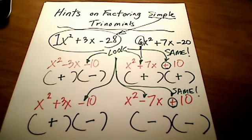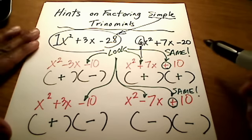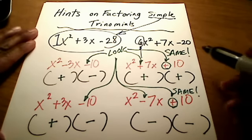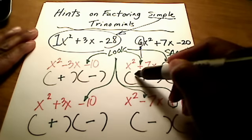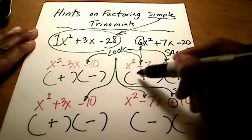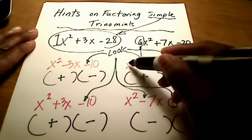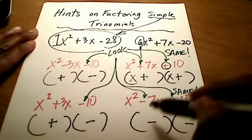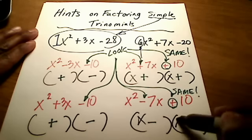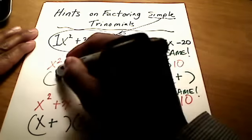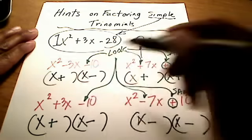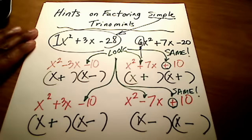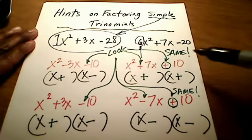So the last thing we have to figure out to factor these simple trinomials is: what two values are going to give us x squared? Well, x times x will. I'll stick that in front of each one of these parentheses. That's what makes them so simple — x and x is going to be the beginning of each of these parentheses.